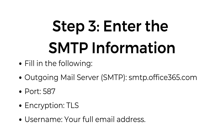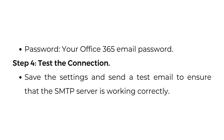Step three: enter the SMTP information. Fill in the following — outgoing mail server (SMTP): smtp.office365.com. Port: 587. Encryption: TLS. Username: your full email address. Password: your Office 365 email password.